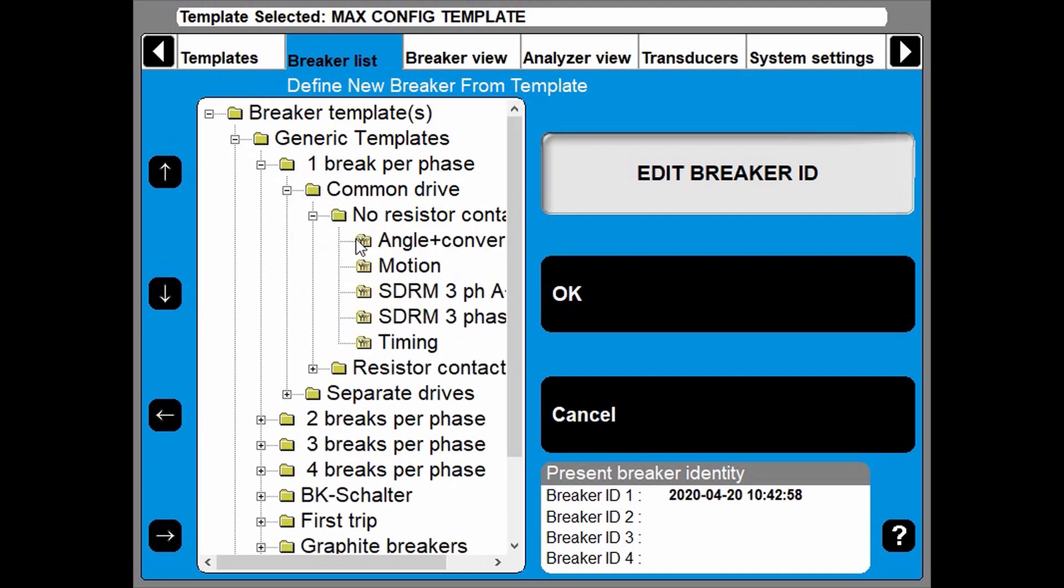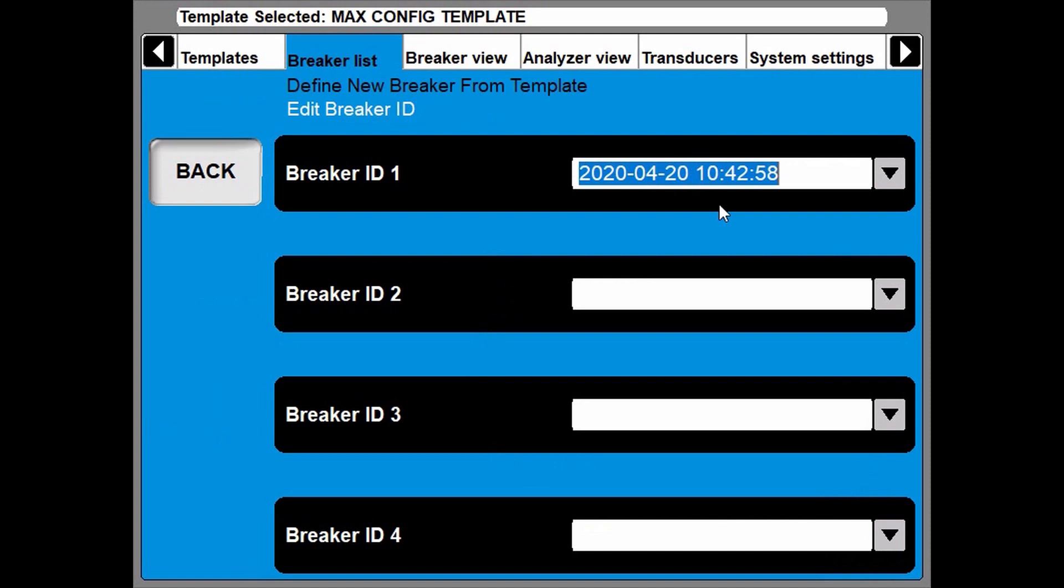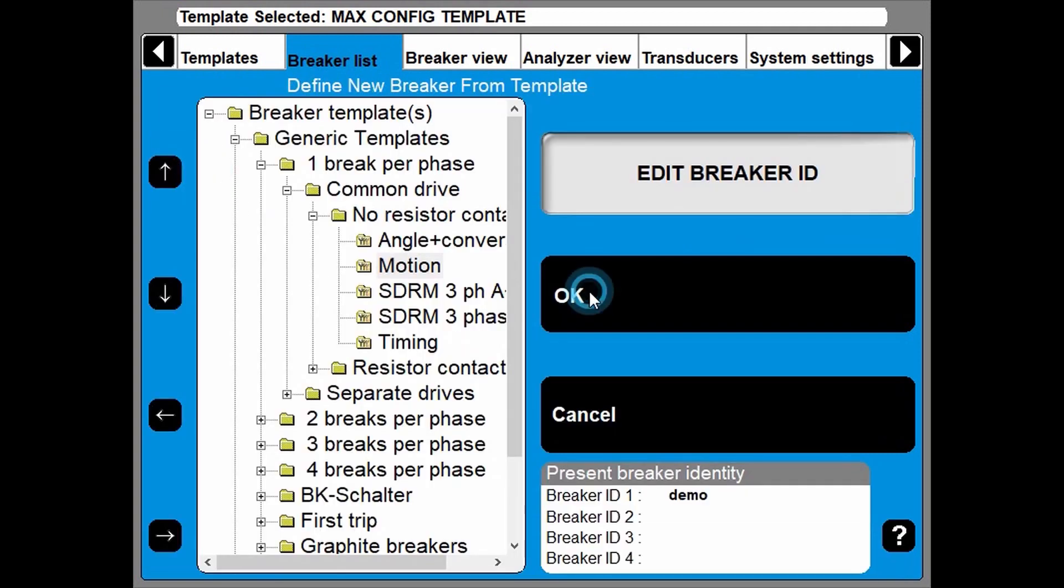No resistor contact. And here you have to decide whether you want to measure with or without motion. I'm going to do with motion. I give the breaker a name. And back. And accept.